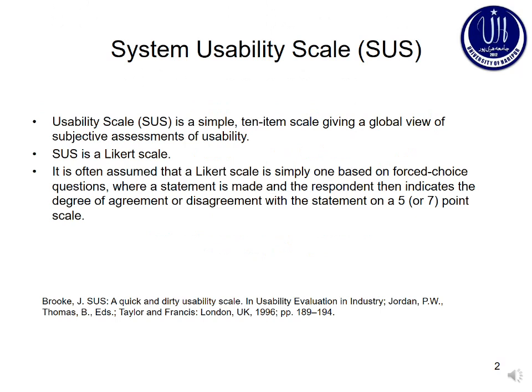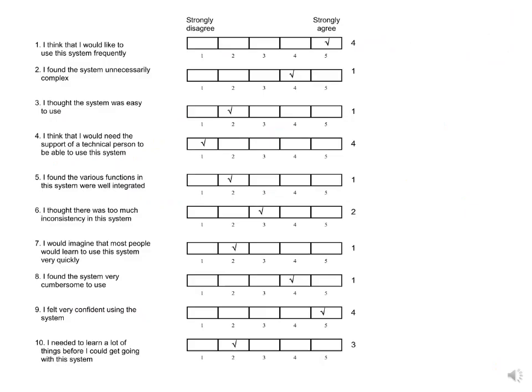Bismillahirrahmanirrahim, welcome to the second part of the lecture. The System Usability Scale has 10 questions. To get user scores, strongly agree means 5 and strongly disagree means 1.